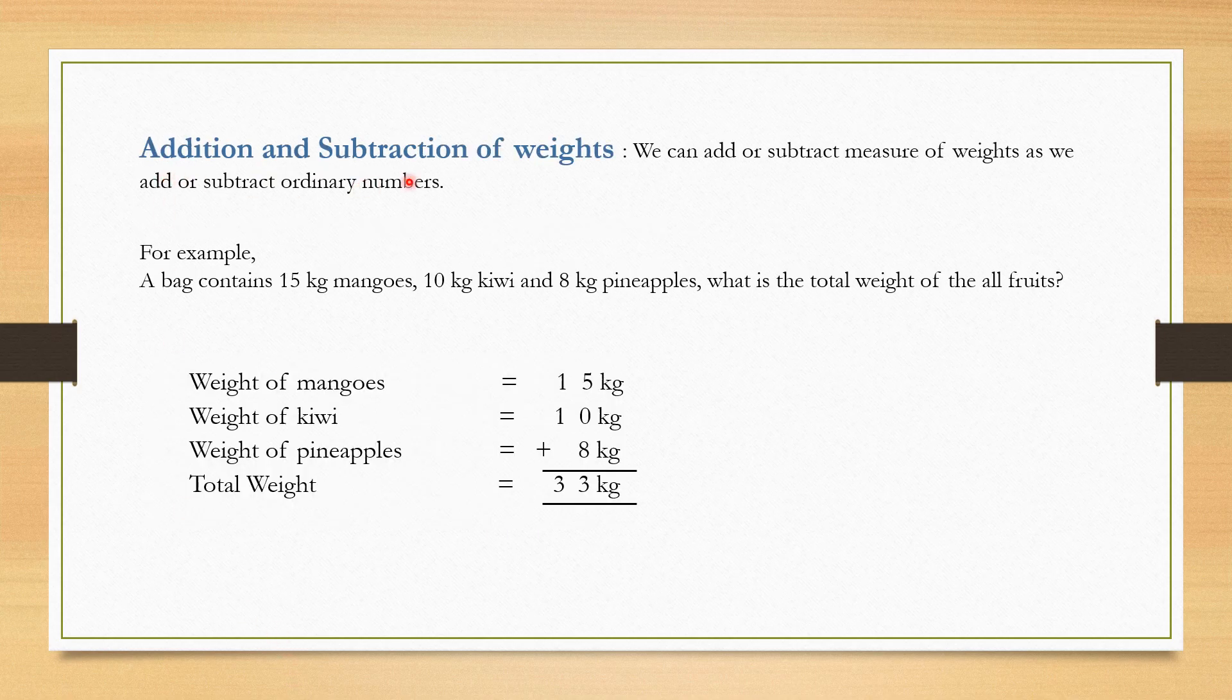Addition and subtraction of weights: We can add or subtract measure of weights as we add or subtract ordinary numbers. Let's see an example. A bag contains 15 kg mangoes, 10 kg kiwi and 8 kg pineapples. What is the total weight of all the foods? Weight of mangoes: 15 kg. Weight of kiwi: 10 kg. Weight of pineapples: 8 kg.